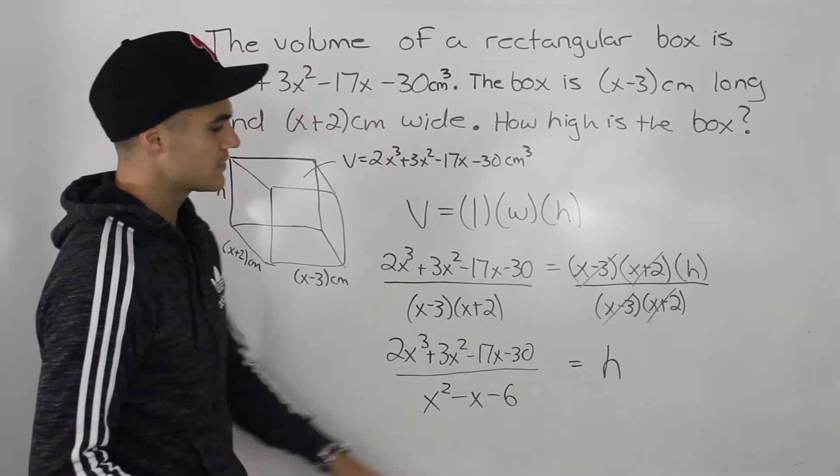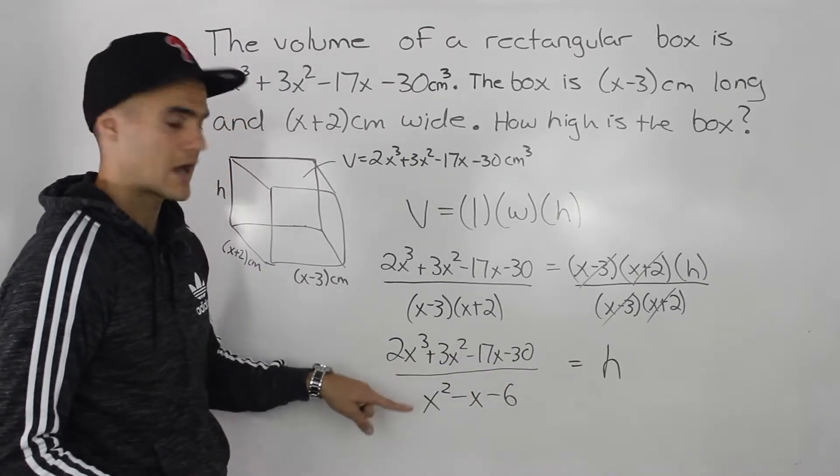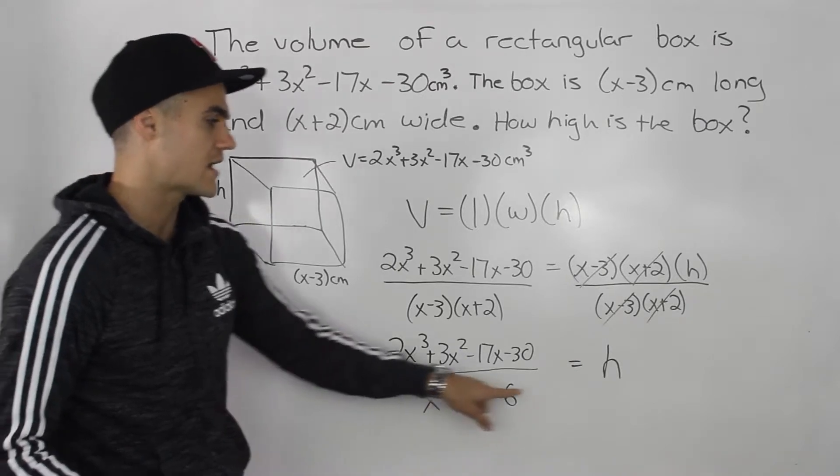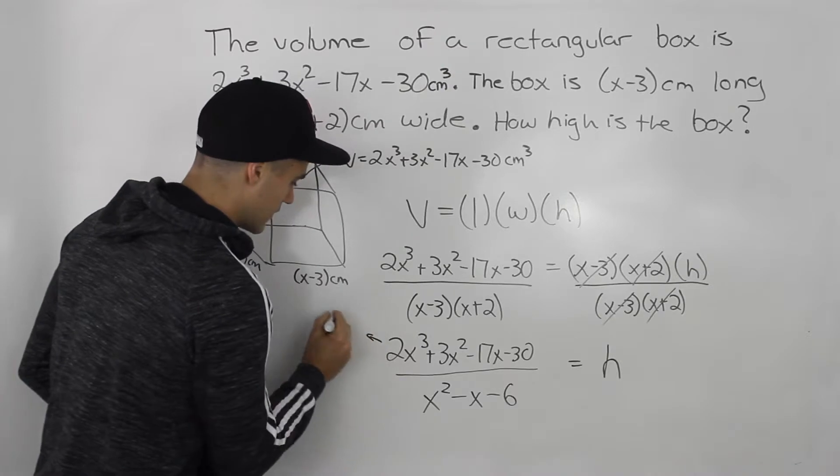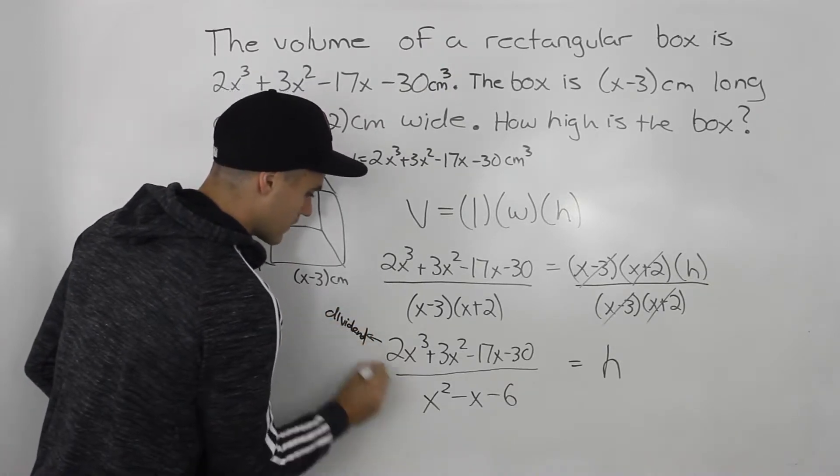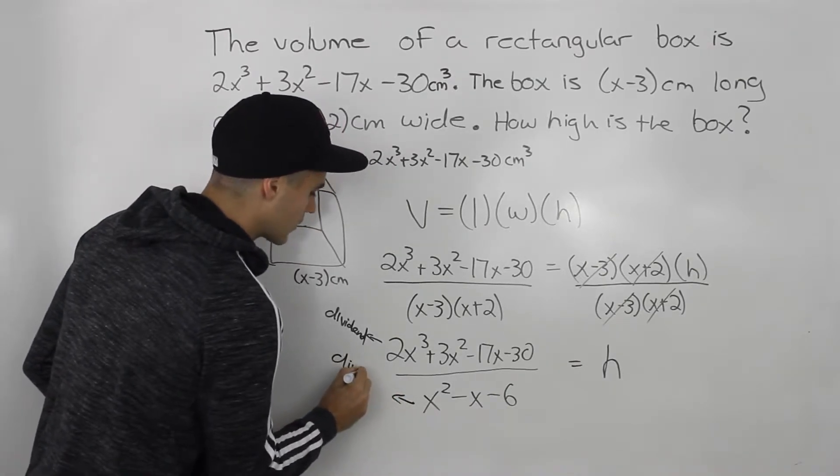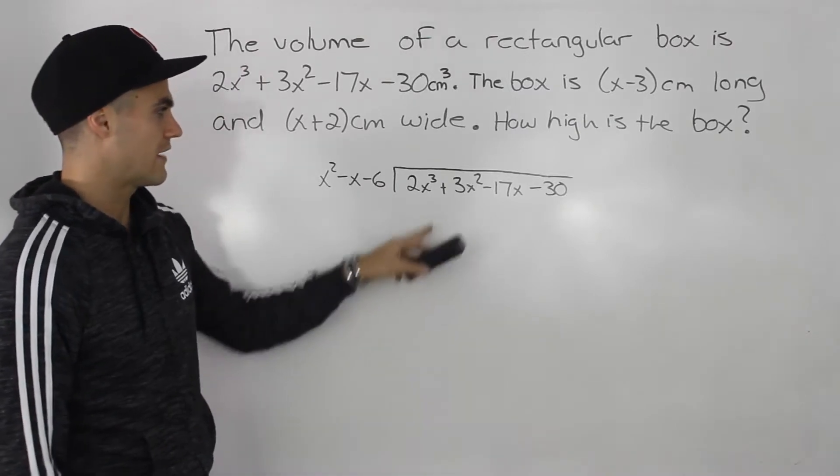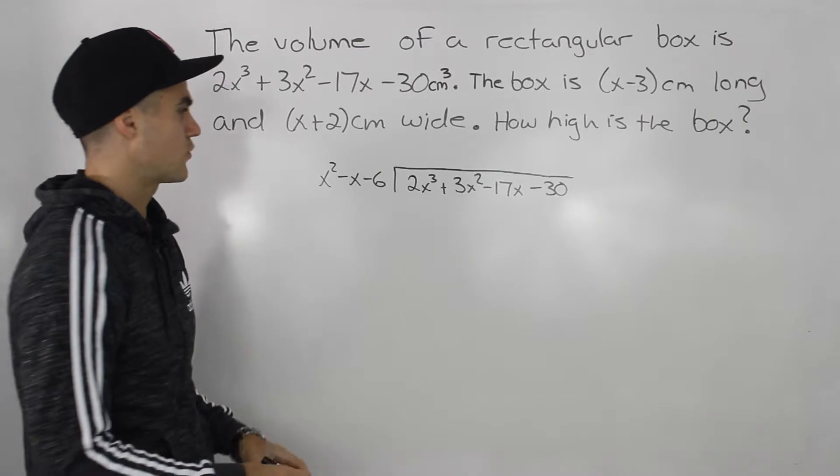So now notice how the height is one polynomial function divided by another polynomial function. And so to find the height, we can use long division, where this here is going to be our dividend. And then this denominator here is going to be our divisor. So putting this in long division form, we have the dividend here, and then we have the divisor. And now we can just perform the division.